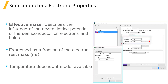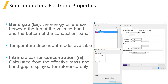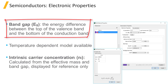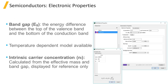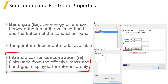In device, the effective mass is treated as a parameter of the material model. In addition, the variation in the effective mass as a function of temperature can be accounted for with a quadratic model. A key physical property of the material is the bandgap, which describes the energy difference between the top of the valence band and the bottom of the conduction band. In device, the bandgap energy is treated as a parameter of the material model, and the temperature-dependent variation in the bandgap is accounted for with a universal empirical model. The intrinsic carrier concentration is calculated from the effective mass and bandgap, and is only displayed in the material database for reference.